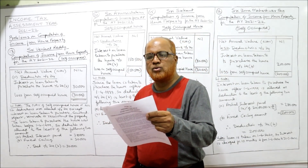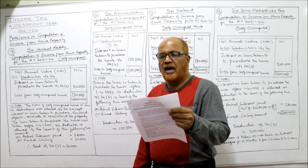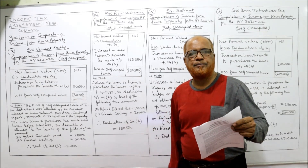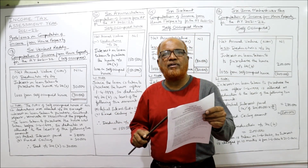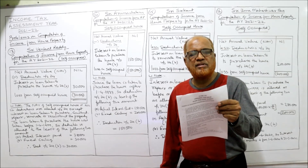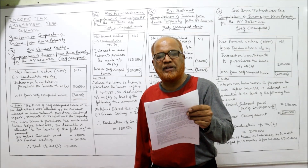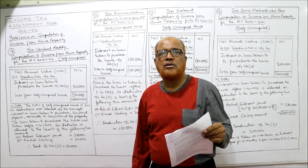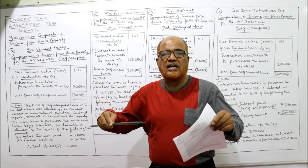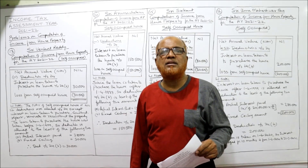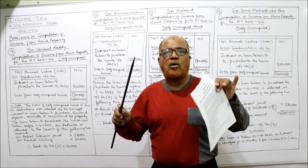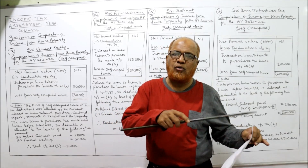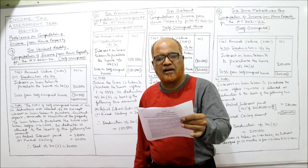Problem 15: Sri Srikant owns a house at Jaipur. Municipal value (MRV): ₹65,000 — ignore. Fair rental value (FRV): ₹78,000 — ignore. The house is used for residential purpose — self-occupied, so NAV is nil. During the previous year, the house is mortgaged with the bank for a loan of ₹5,00,000 at 15% interest to renovate the house. Interest on loan taken to renovate the house will be allowed as deduction, but the ceiling limit is ₹30,000.